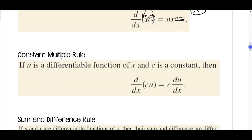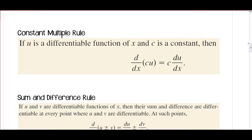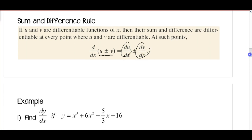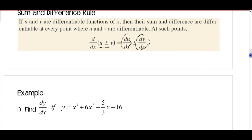The constant multiple rule: if you have a function multiplied by a constant, pull the constant out front and then find the derivative of the function. Sum and difference rules: the derivative of the sum or difference of two functions can be separated into individual derivatives, then add or subtract the results.